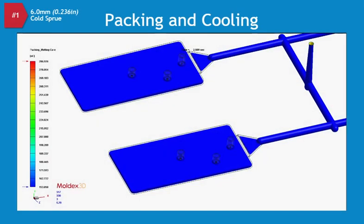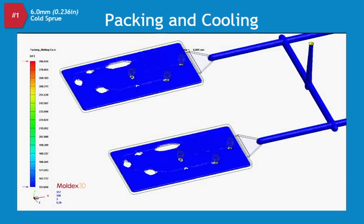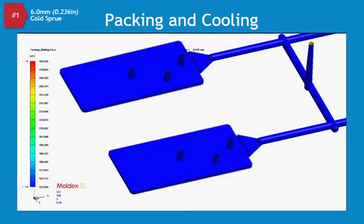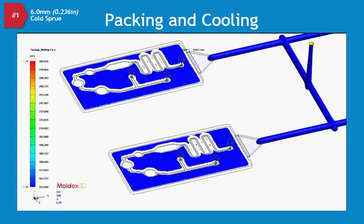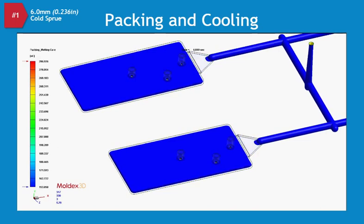Now, let's move on to the cooling behavior for this part and runner system design. To get a better view, we are looking at a 2-cavity close-up of the melt core animation. Here, you can see the polymer cooling down.